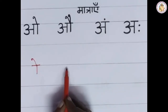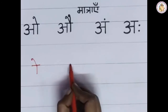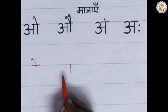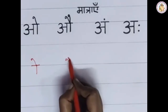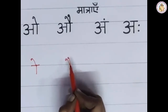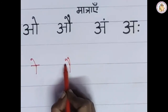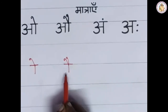Now let us learn how to write 'au' Matra. After the vyanjan, draw one standing line. On the top, draw two slanting lines by touching this standing line which is drawn next to the vyanjan. This is the 'au' Matra.